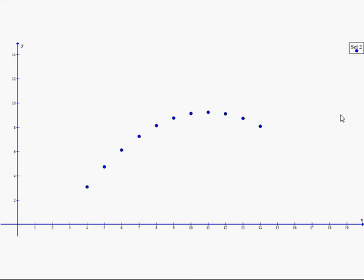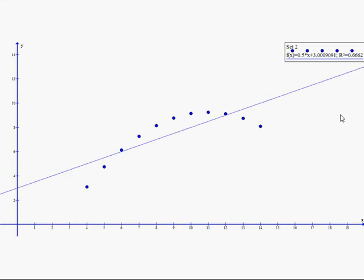Here's the second set of data. It looks quite different, but we put a line of best fit through it, we get 0.5X plus 3.